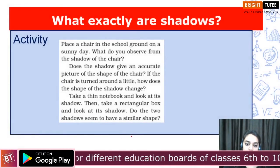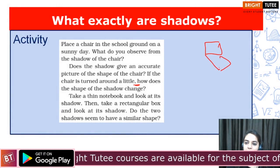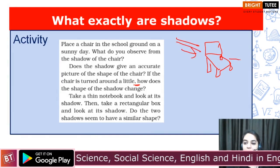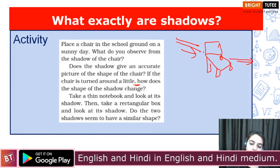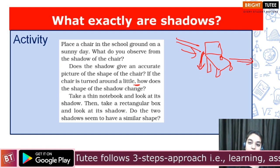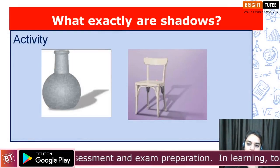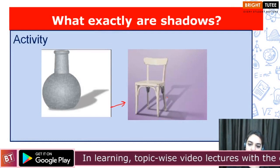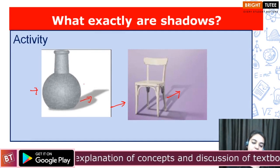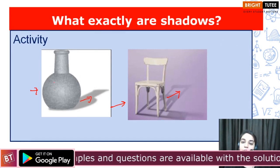Now we are going to conduct one more activity. You will place a chair in your school playground — suppose sunlight is coming from this direction, so you will observe its shadow in this direction. Now shift or tilt the chair in some other direction, change its position, and you will observe that it changes the shape of the shadow too. If light is coming from this direction the shadow will be obtained in this direction; change the direction of light or position of the object and the shape and position of the shadow will also change.